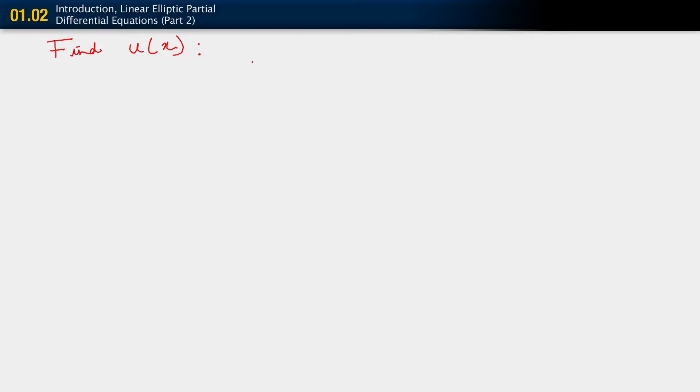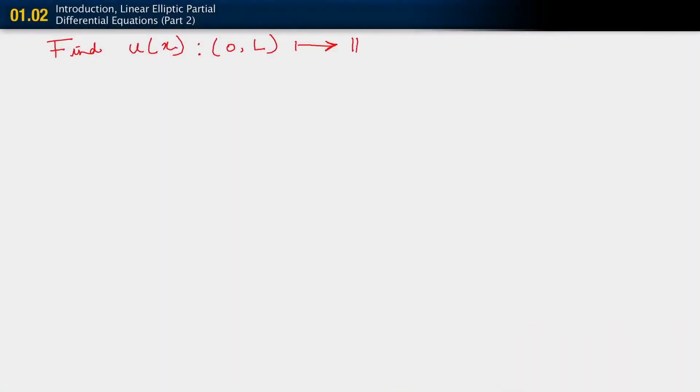I'm going to introduce some more mathematical notation that will be useful for us. We want to think of u, this function, as being a mapping from a certain domain in one-dimensional space. We're thinking of it as being a mapping from the open interval (0, l) into a certain range. The displacement field, because we're doing a problem in one dimension, is for our purposes just a scalar — nothing more than a real number. I'm going to denote that as R, where R denotes real numbers.